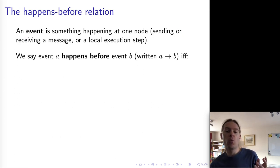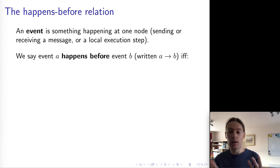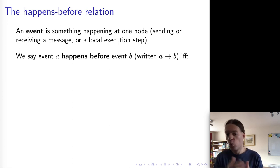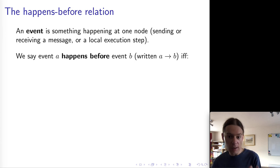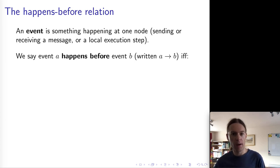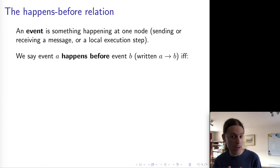So how do we solve this problem? In distributed systems, we use something called the happens-before relation. This is a mathematical model of activity in a distributed system. When talking about activity, we first need to define what the things that happen are — we call them events. An event can be one node making a local execution step, one node doing something. Or an event could be a message that one node sends to another: the sending of the message is one event, and the receiving of the message is another event.